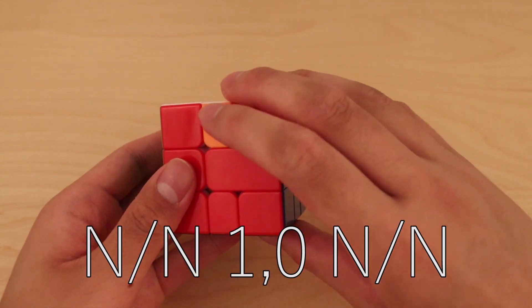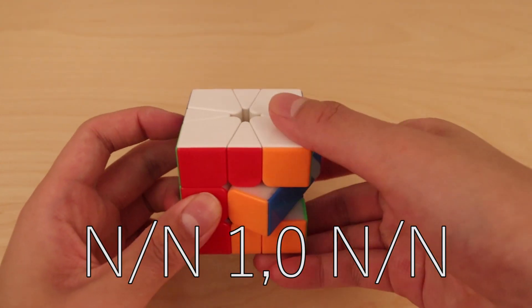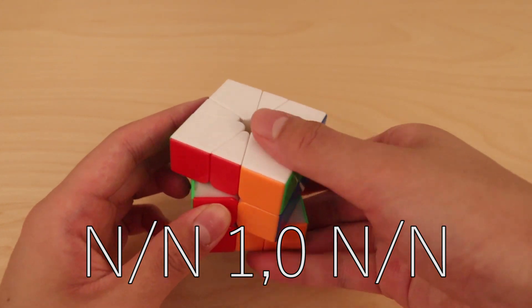First off, you can do NN twice. So you can do NN like this, miss a line, and do NN like this.